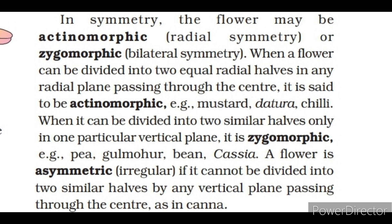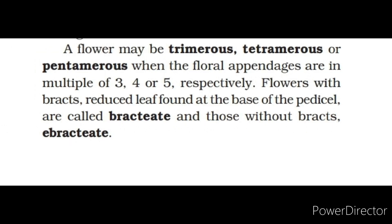When a flower can be divided into two similar halves only in one particular vertical plane, it is zygomorphic — example: pea, gulmohar, bean, cassia. A flower is asymmetric or irregular if it cannot be divided into two similar halves by any vertical plane passing through the center, as in canna. A flower may be trimerous, tetramerous or pentamerous when the floral appendages are in multiples of three, four or five respectively. Flowers with bracts, a reduced leaf found at the base of the pedicel, are called bracteate, and those without bracts are called ebracteate.